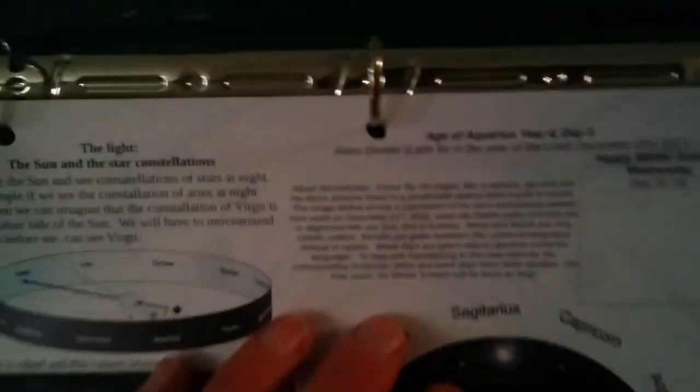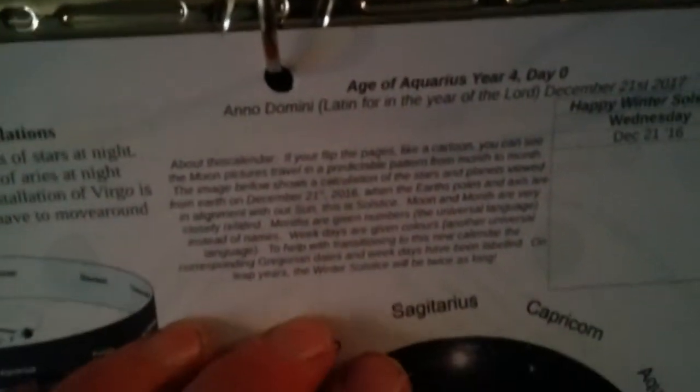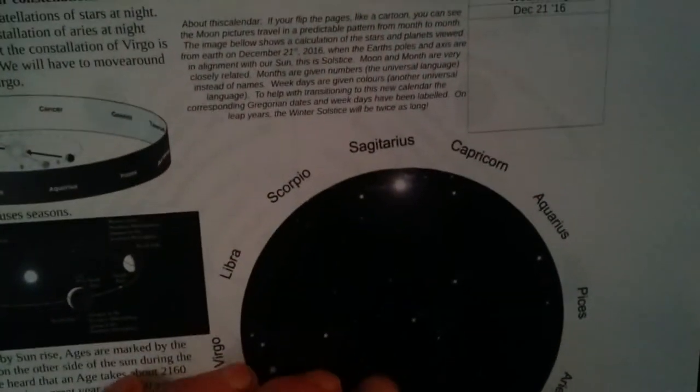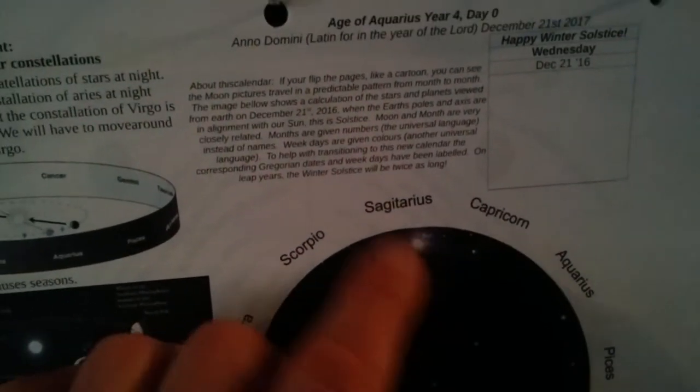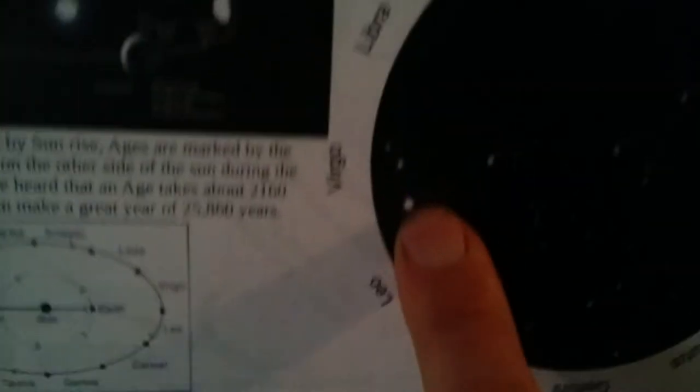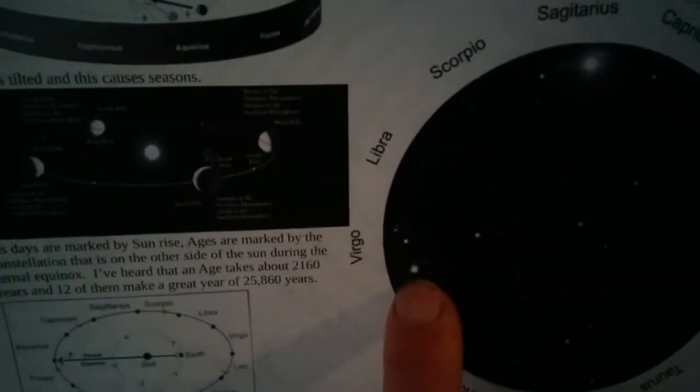This picture is shown on the first day of this calendar, or even day zero is what I'm going to call it. On day zero, the Sun here is in Sagittarius. The Moon over here is between Leo and Virgo.